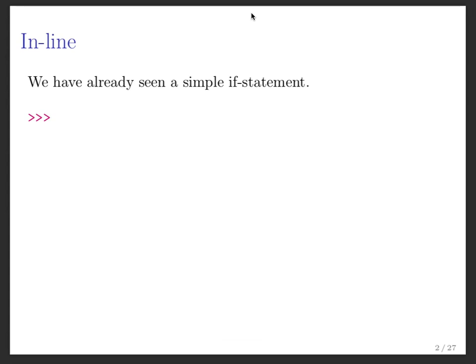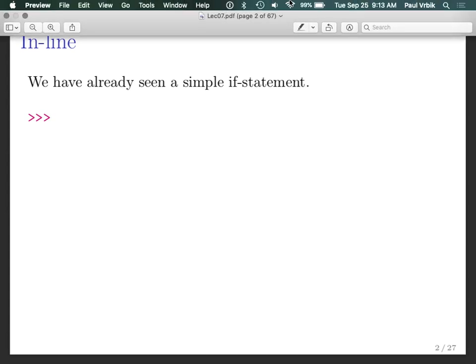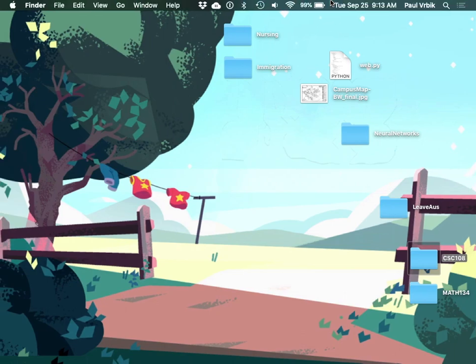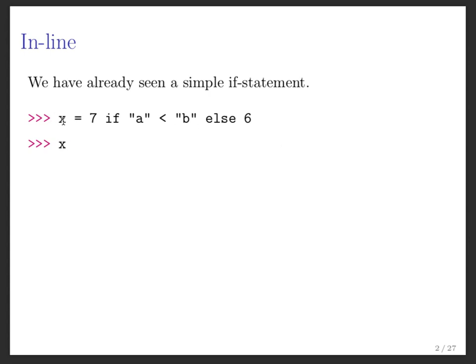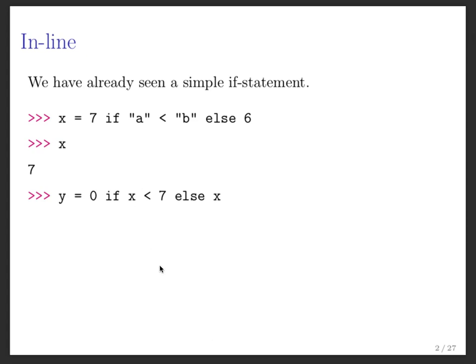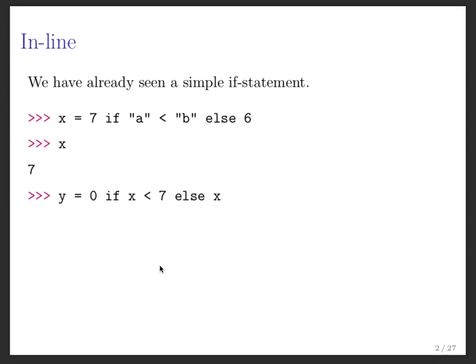Let me point out that we've already seen a simple one-line inline if statement. I wrote something like this: x is equal to 7 if a is less than b, else it's 6. So what do you think this evaluates to if I ask for the value of x? Let's walk through this: x is 7 if a is less than b. What does this evaluate to? True. So if this is true, it's going to set x to 7. Another one: y equals 0 if x is less than 7, else it's x. Y equals 0 if 7 is less than 7, which is false, else it's 7. So y gets 7.